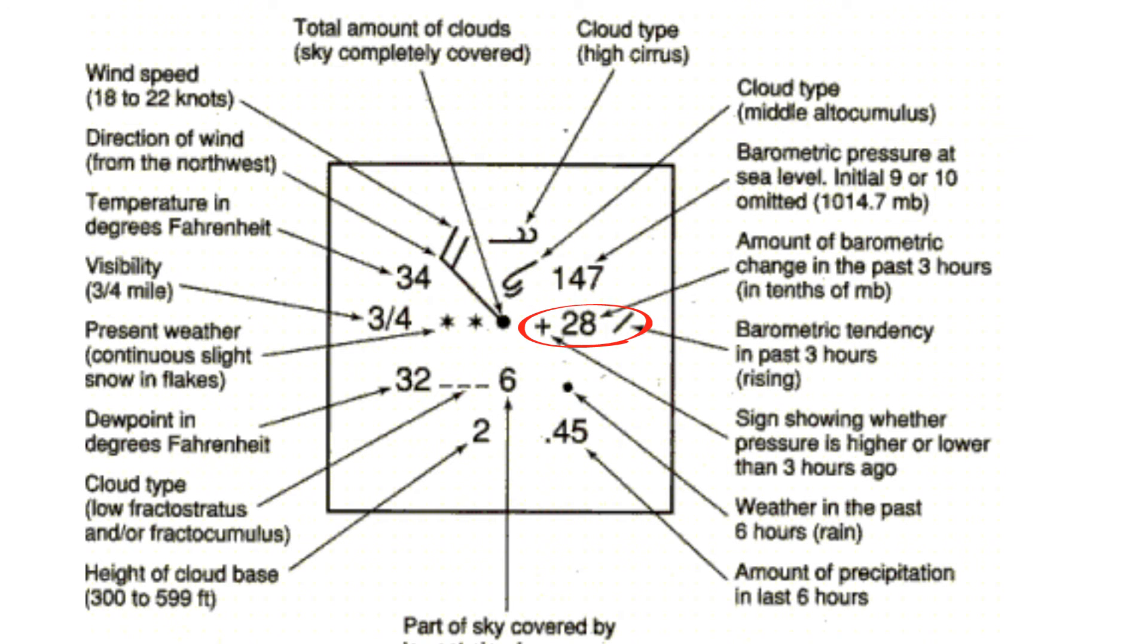Now this area is about the barometric pressure and you know the barometric pressure is a good predictor of weather. First this plus or minus tells you if it is going up or down. Next is the current reading and then the tendency.